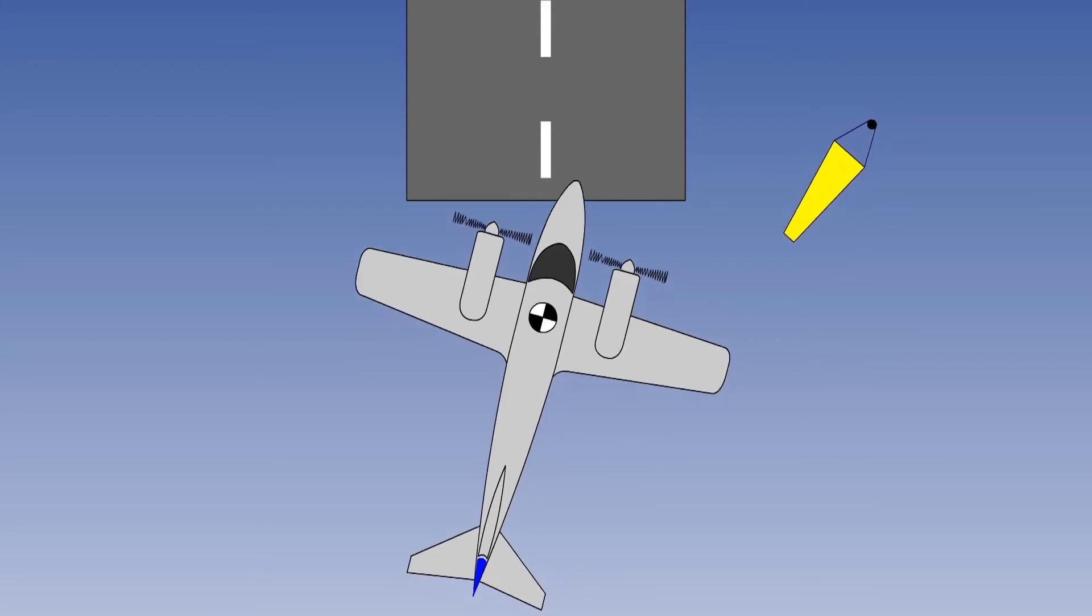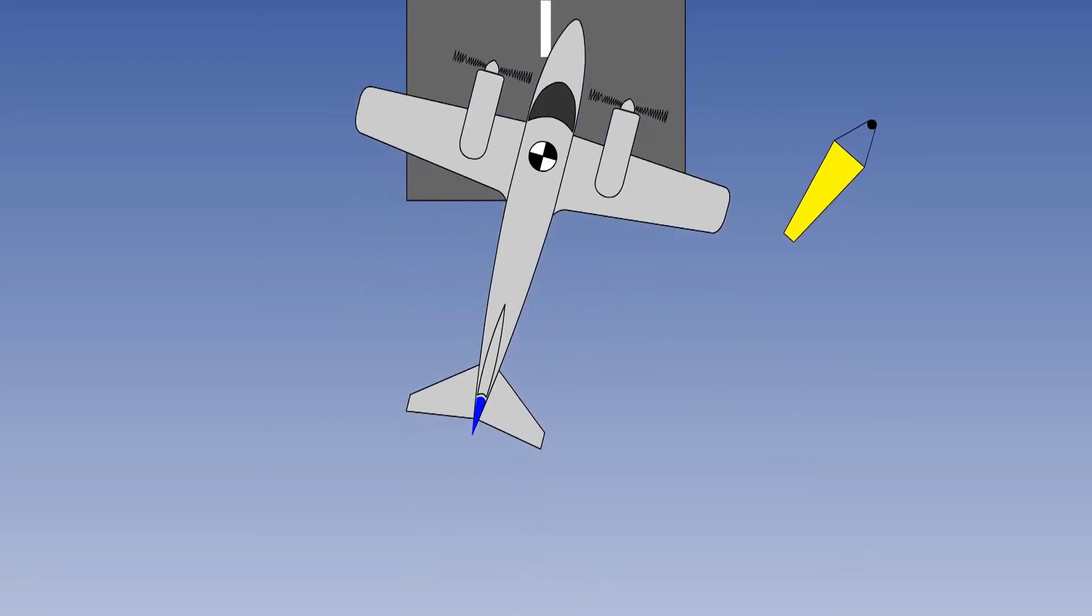You are now tracking the extended runway centreline, but with the aircraft at an angle to the direction of flight. If you were to touch down in this attitude, you would damage the undercarriage.